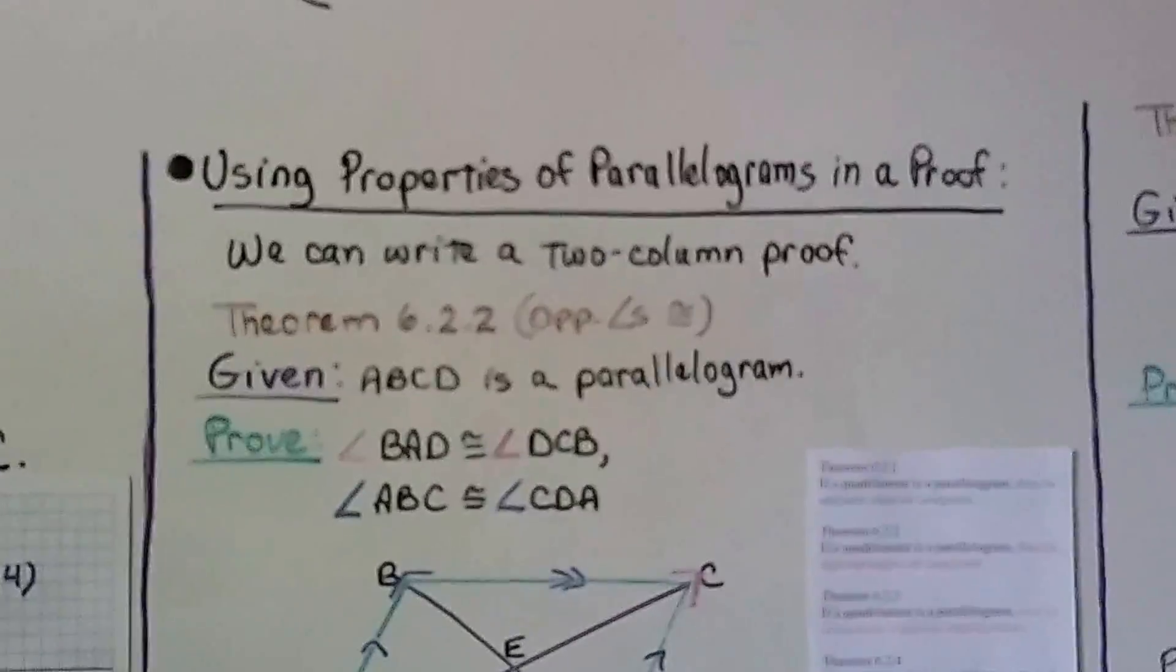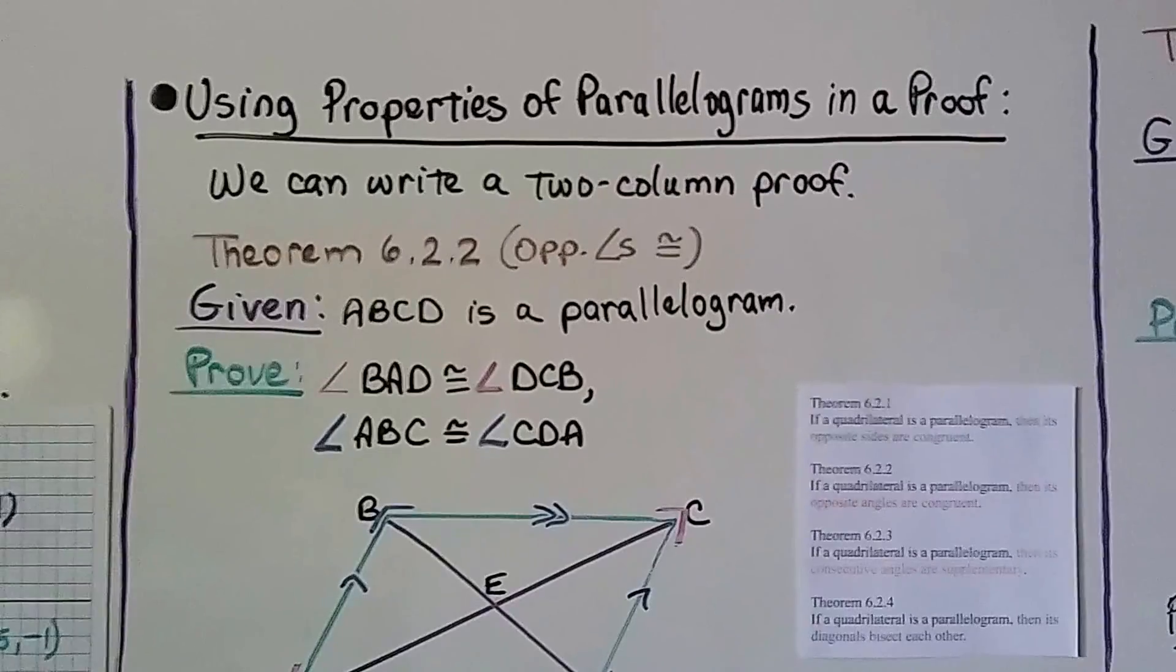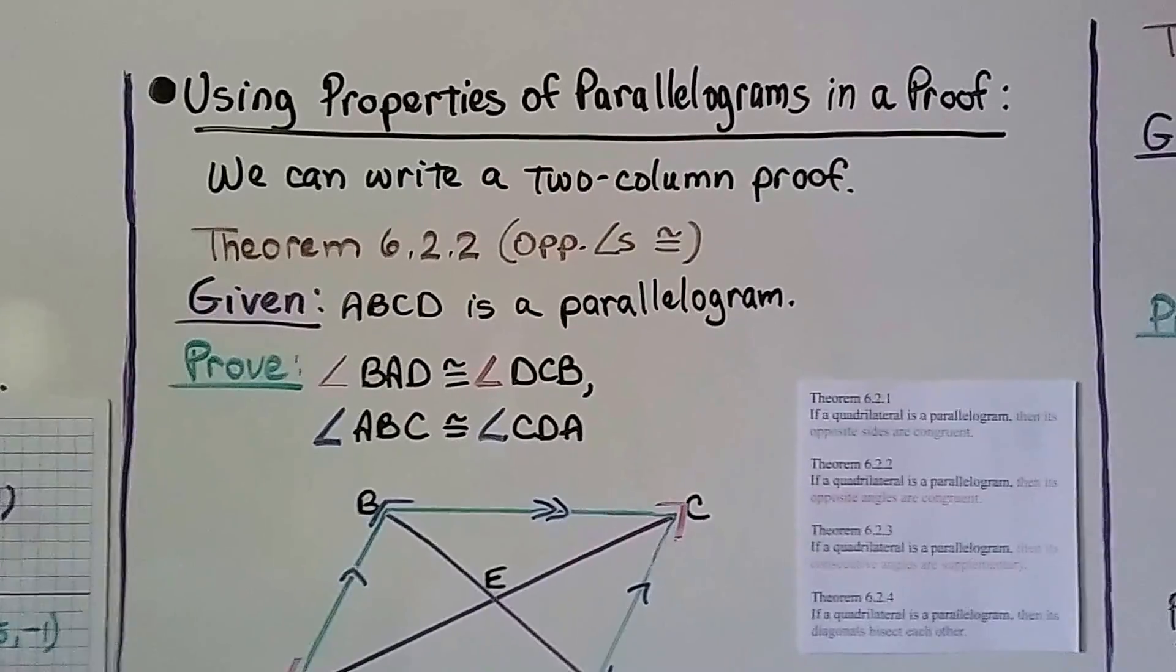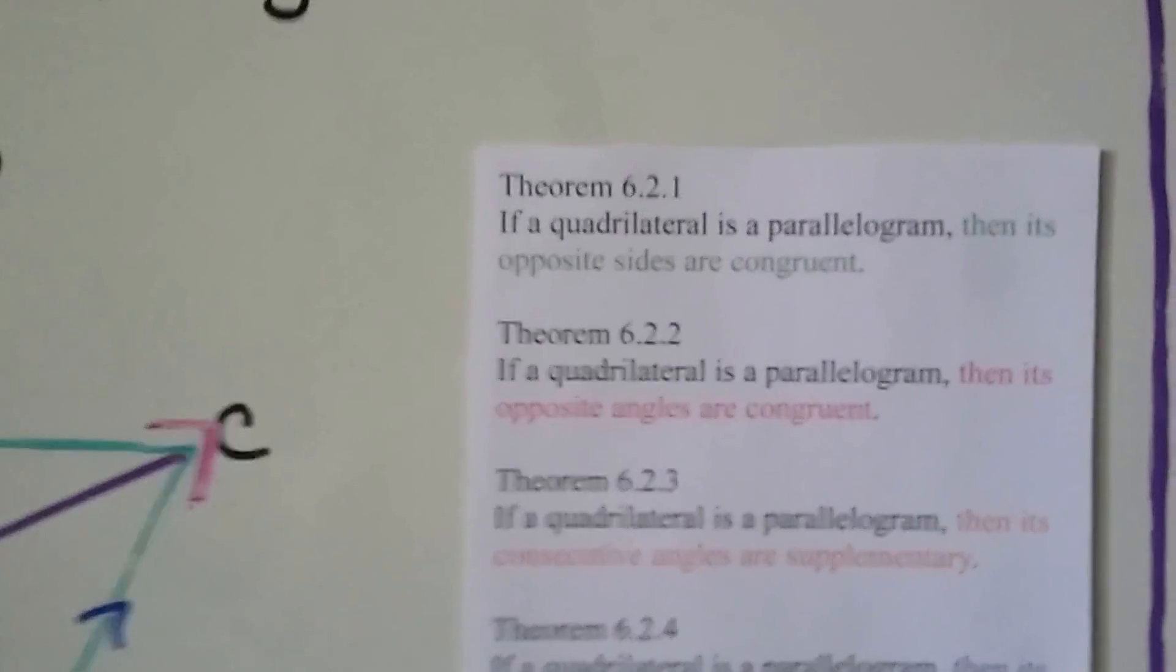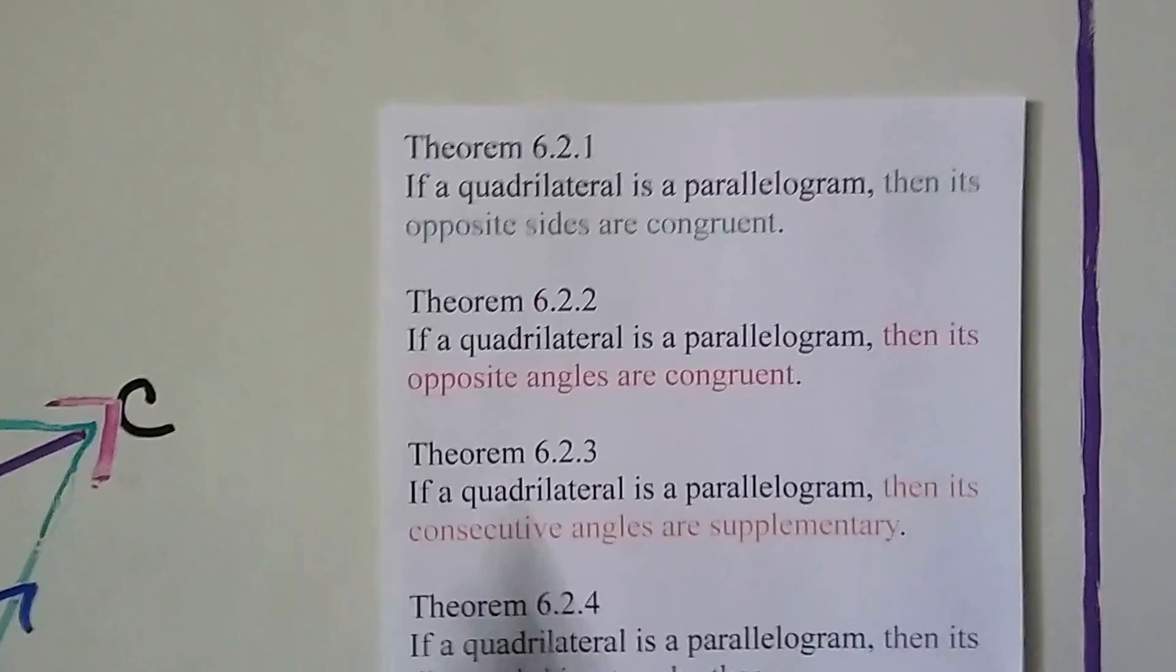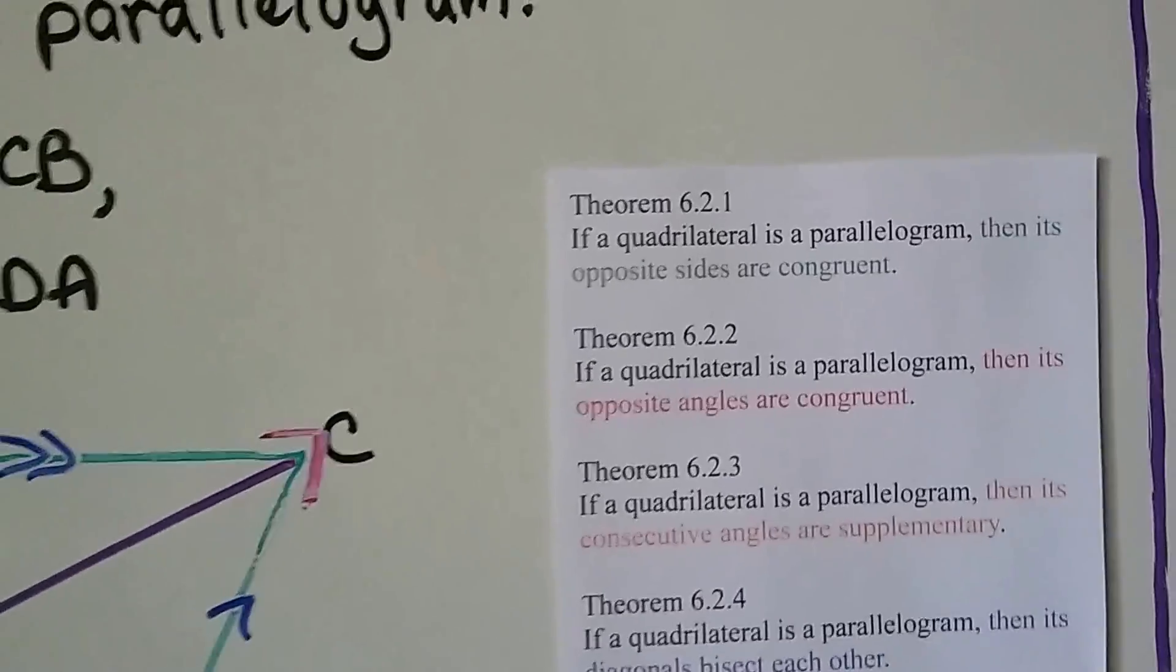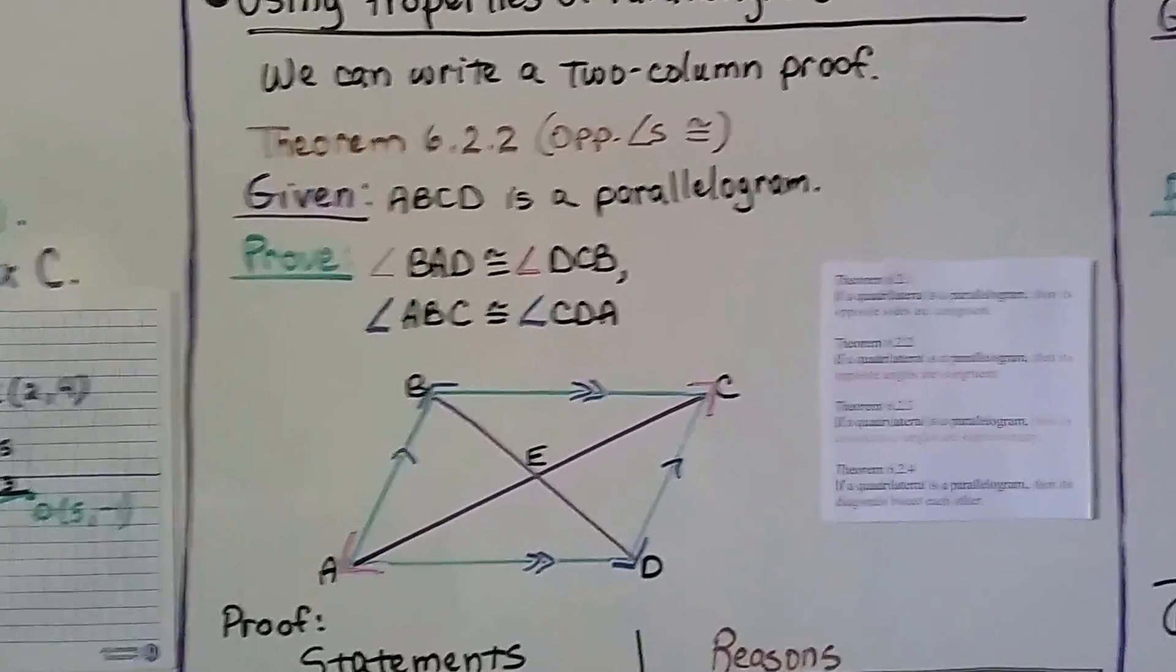Using properties of parallelograms in a proof, we can write a two-column proof. And for theorem 6.2.2 that said the opposite angles will be congruent. So if you remember from the previous video, 6.2a, if a quadrilateral is a parallelogram, then its opposite angles are congruent.